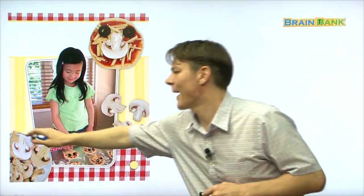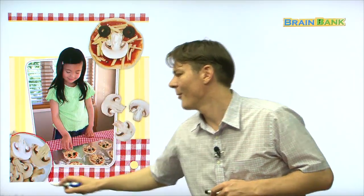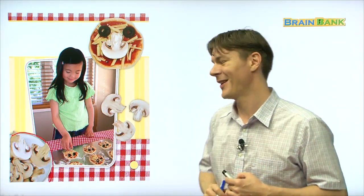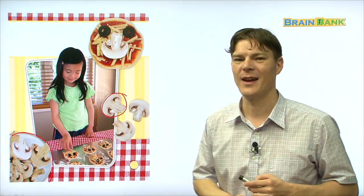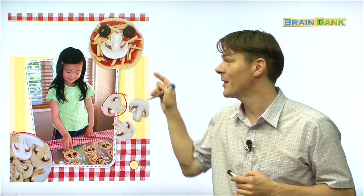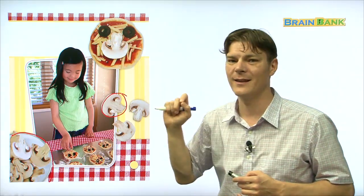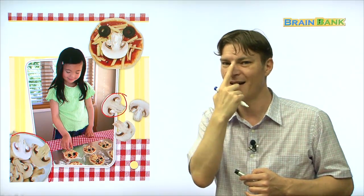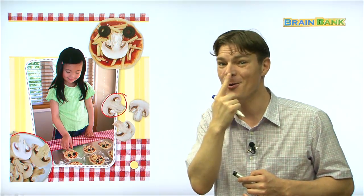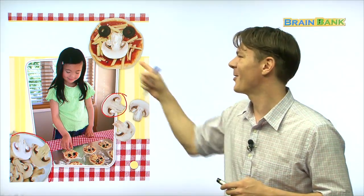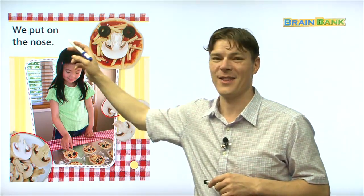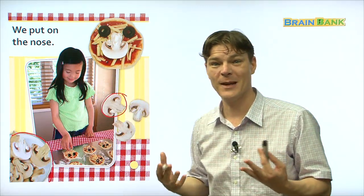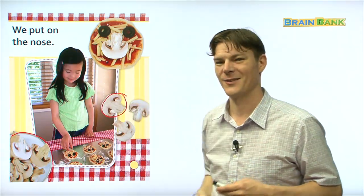Now, she's grabbing some of these. What are those, boys and girls? Those are mushrooms. So, here you can see one, two, three mushrooms. And, she's putting the mushroom onto the pizza and it kind of looks like a nose. Right? It looks like a nose. We put on the nose. Everyone repeat with me. We put on the nose. Great.